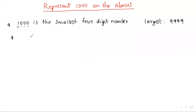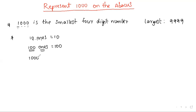Ten ones is equal to 10. 100 ones equals 100 — ten ones means we multiply 10 by one. 100 ones equals 1000. Similarly, 10 tens multiplied: 10 tens equals 100.